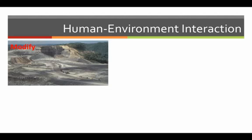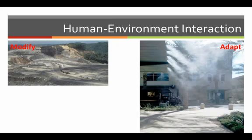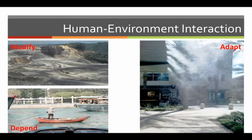Humans modify their environment in such ways as mountain top removal, building dams, and building roads. Humans also adapt to environmental conditions by utilizing clothing, air conditioning, and other technologies. In addition, humans depend on their environment for food, water, and shelter.